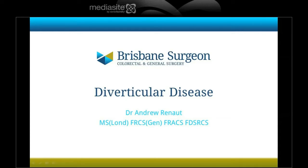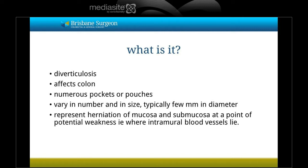This presentation describes diverticular disease, in particular how it arises and how it is treated. Diverticular disease, otherwise known as diverticulosis, affects the colon but does not affect the rectum. It tends to affect the sigmoid colon, the last part of the colon just before the rectum. It is characterized by numerous pockets or outpouchings of the bowel wall, typically a few millimeters in diameter, representing herniation of the mucosa and submucosa through points of weakness where blood vessels traverse the muscle.